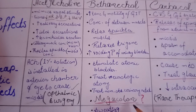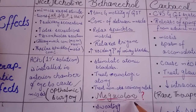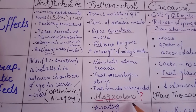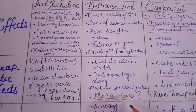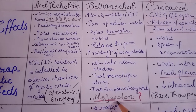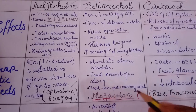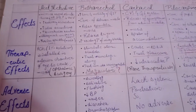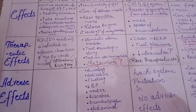The next disease bethanechol treats is megacolon, which results from abnormal dilation of the colon. Why is there abnormal dilation of the colon? Because of the decrease in the tone of the colon, absence of peristalsis, and decrease in the motility of the colon. Bethanechol is used for the treatment of megacolon. Its adverse effects are nothing but the exaggeration of our parasympathetic effects.